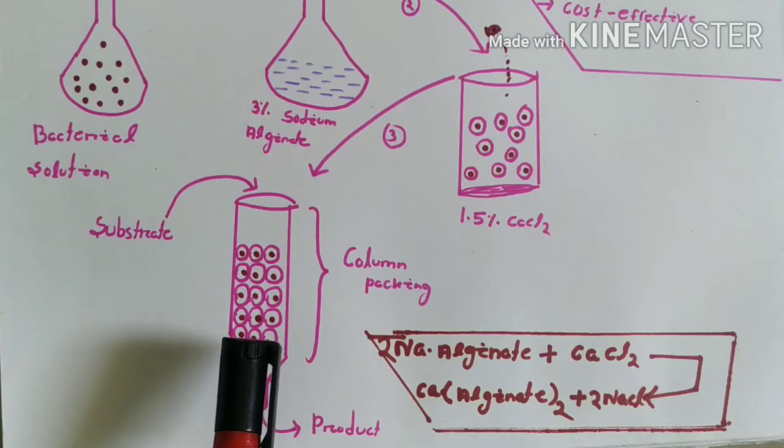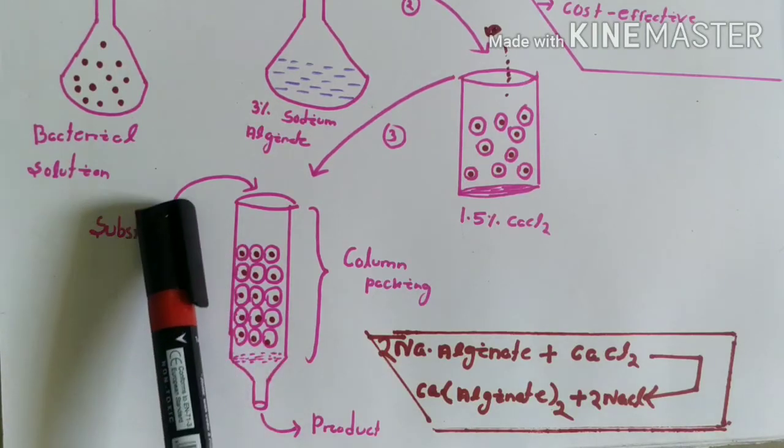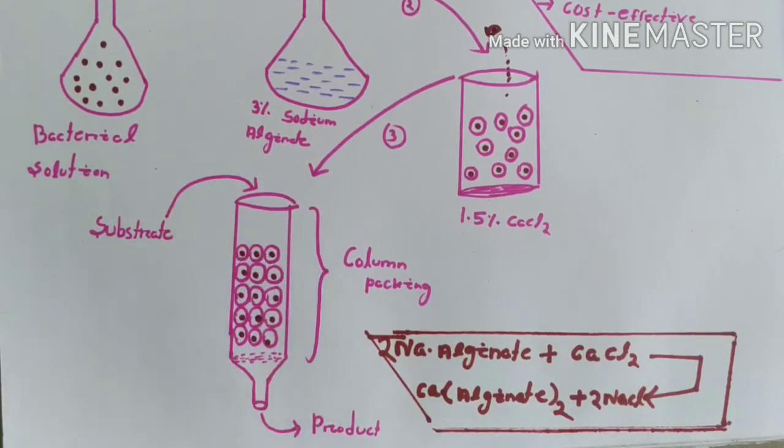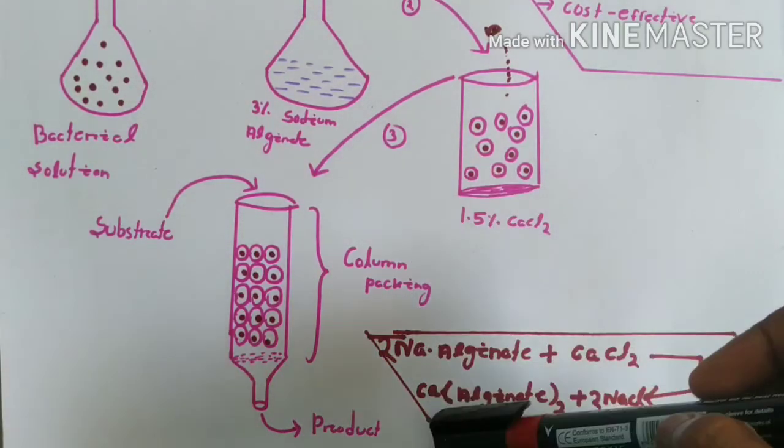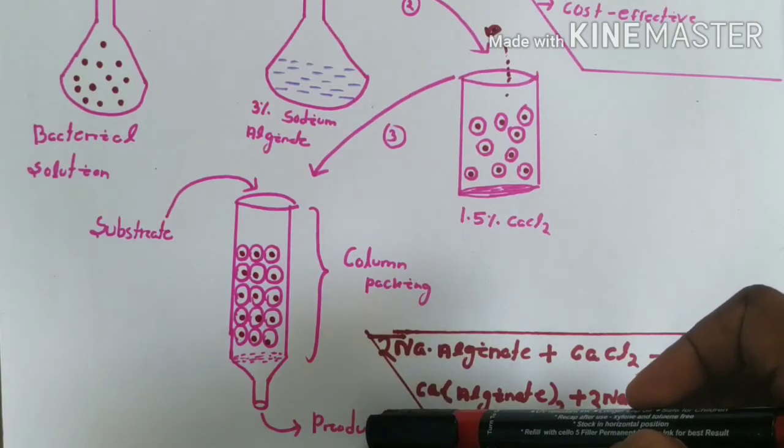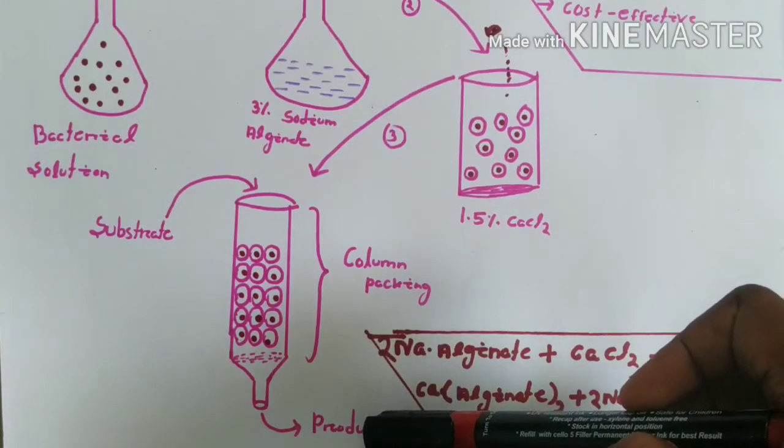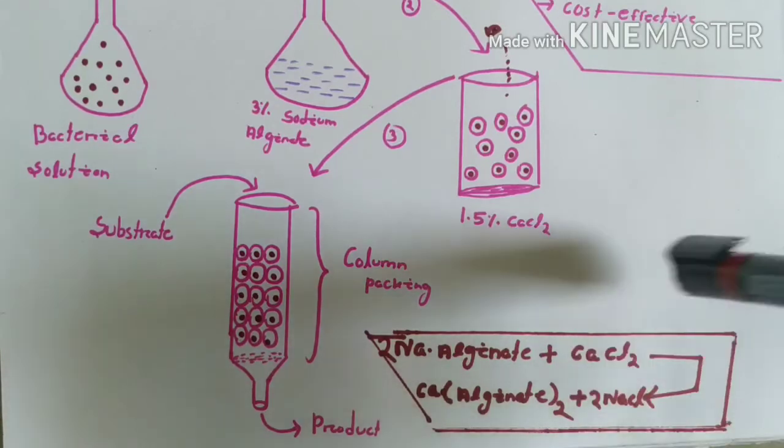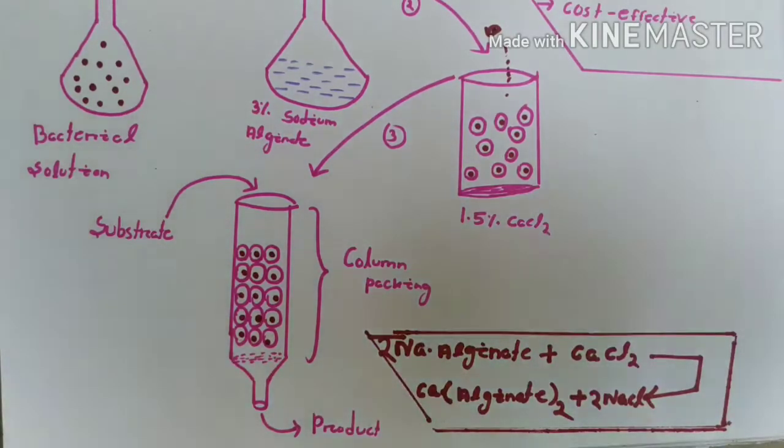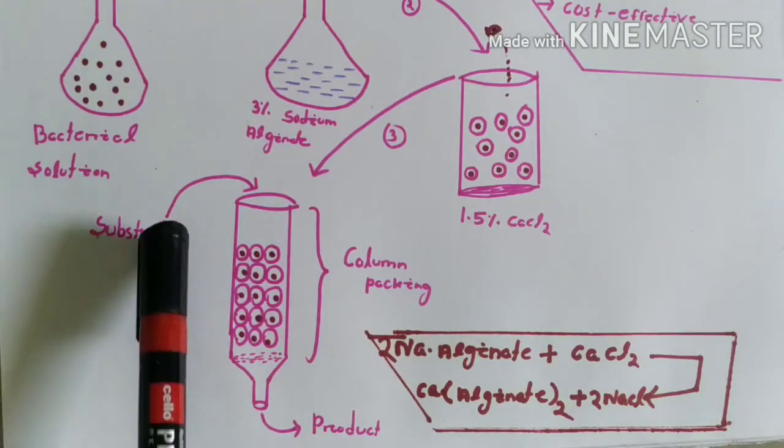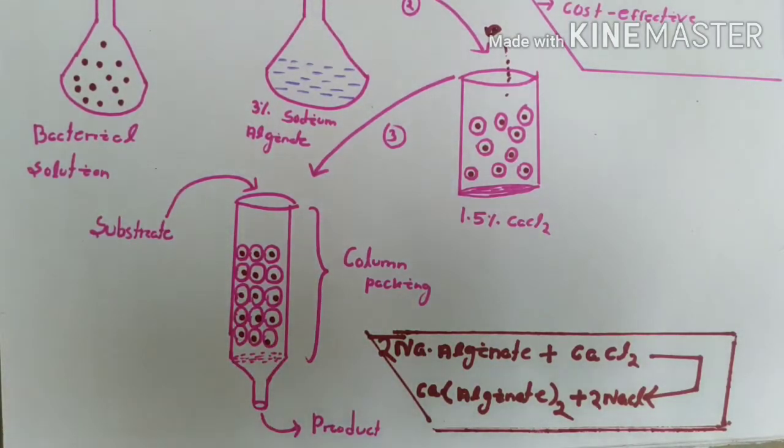We have to add the substrate at the upstream site and can get the product in the downstream. By using this process, we can get the bacterial product that is essential for us.